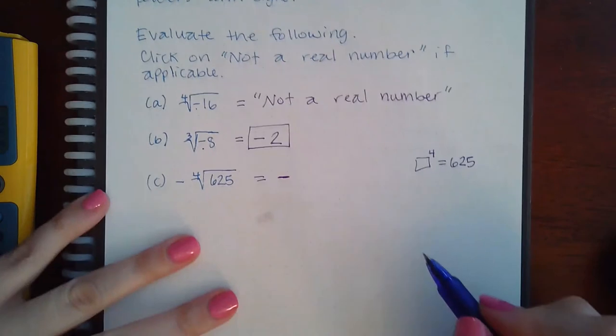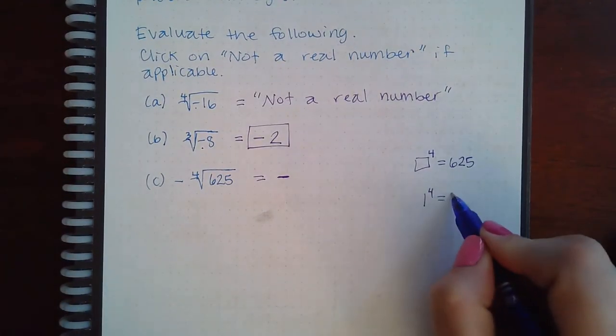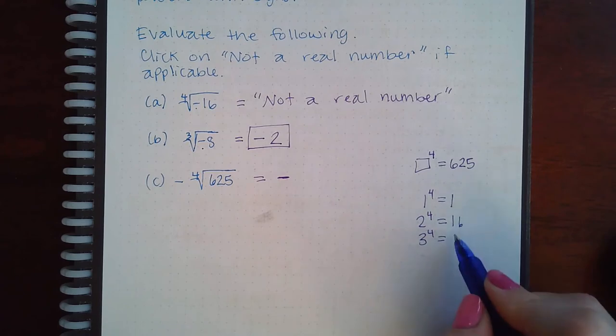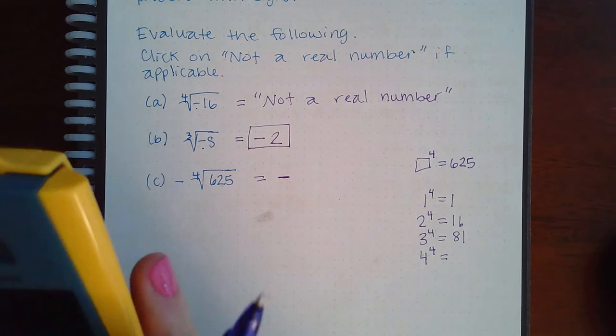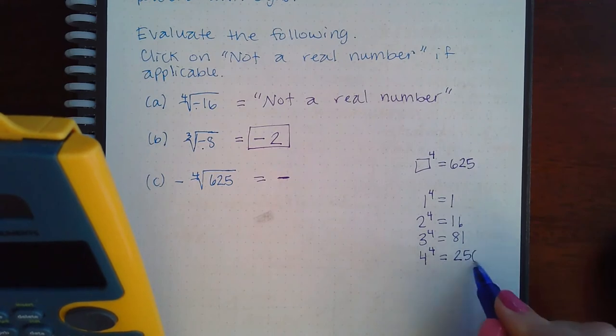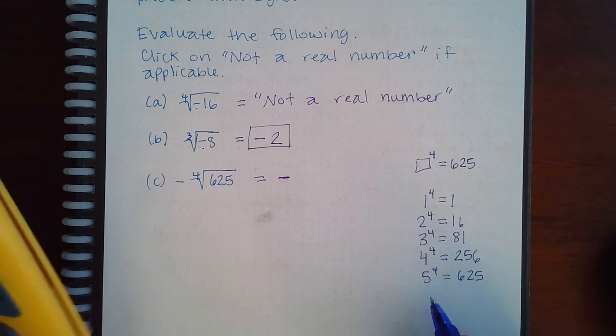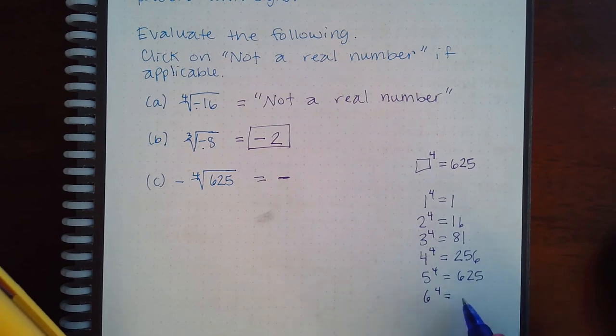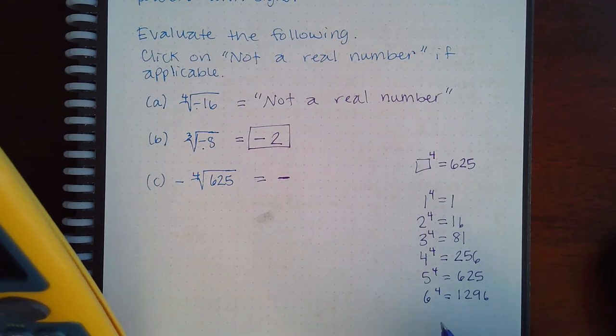It does help to know some of the fourth powers. One to the fourth is 1, two to the fourth is 16, three to the fourth is 81, four to the fourth—I'm not even sure what that one is because fours can be written in terms of twos, so I don't usually commit this one to memory. Five to the fourth I know is 625, and then six to the fourth is going to be 1296.